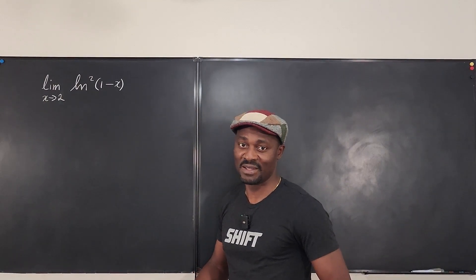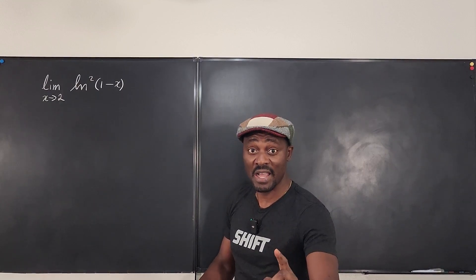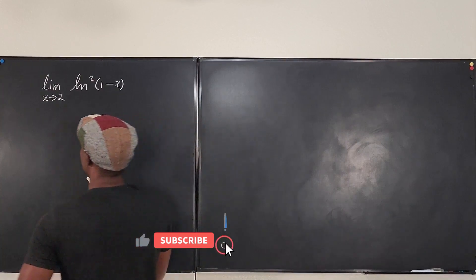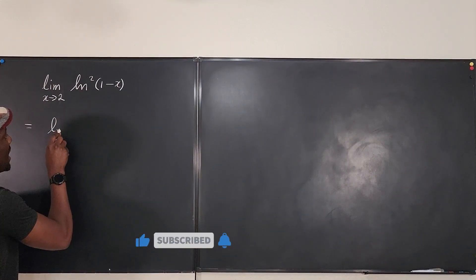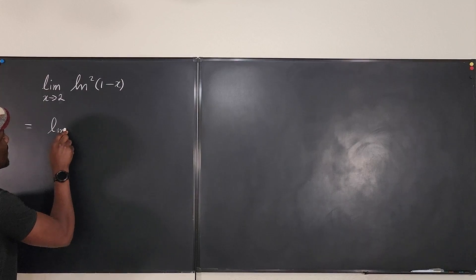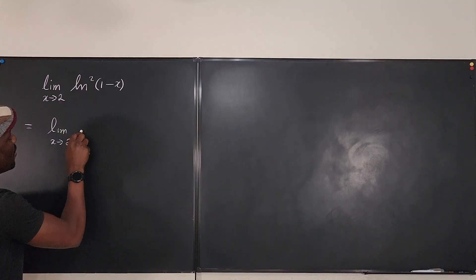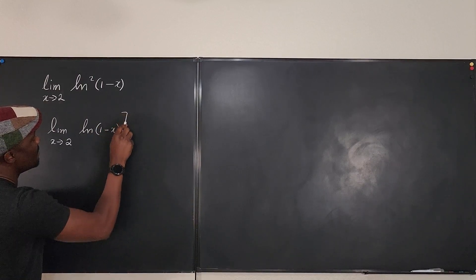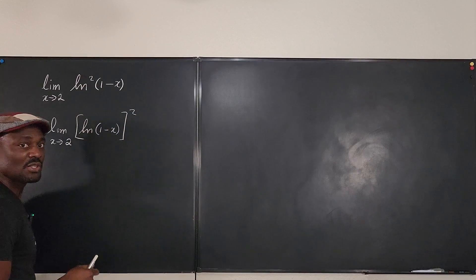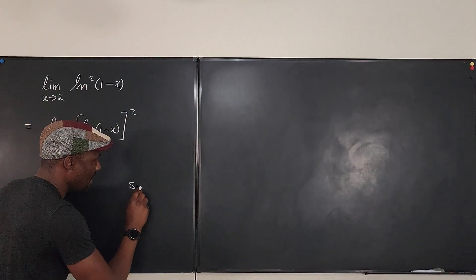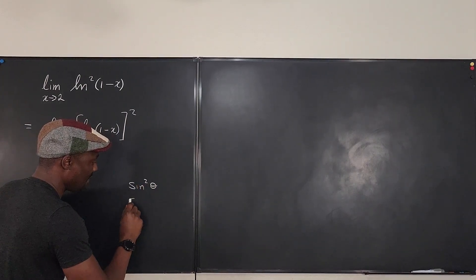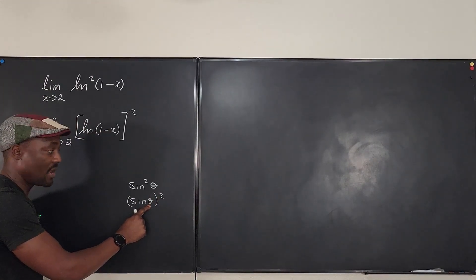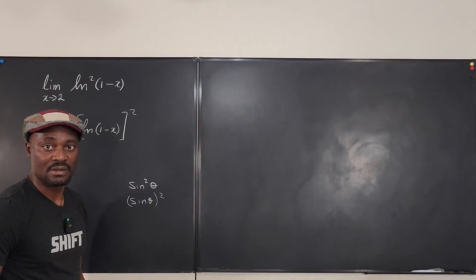The first thing we're going to do is plug in this value. But first, notice this expression is the same thing as the limit as x approaches 2 of the natural log of (1 minus x), everything squared. It's not just the argument that's squared — the entire expression is squared, just like sine squared theta means sine theta, all squared.